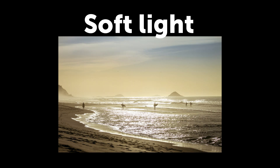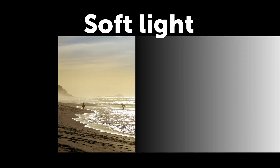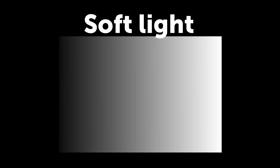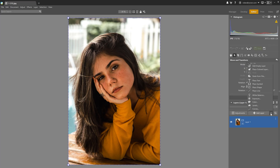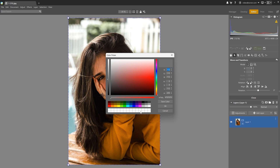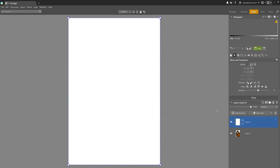Soft Light simply increases contrast by applying darken and lighten modes to the layer depending on different colors. It takes each pixel and makes light pixels lighter and dark pixels darker. This effect can be likened to shining with a diffused spotlight. For the demonstration, I'm going to add a color layer with white to the second layer, then apply the Soft Light blending mode.